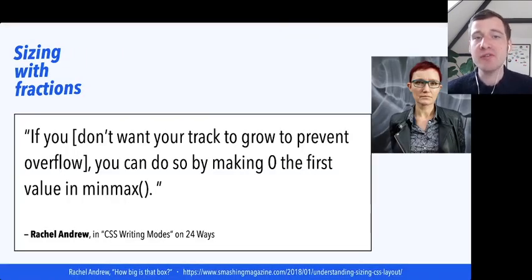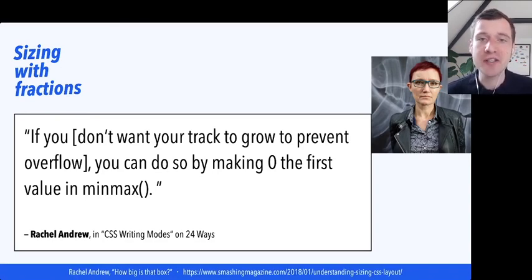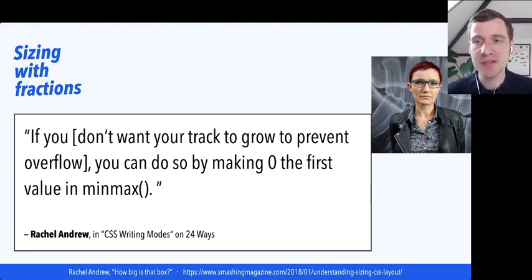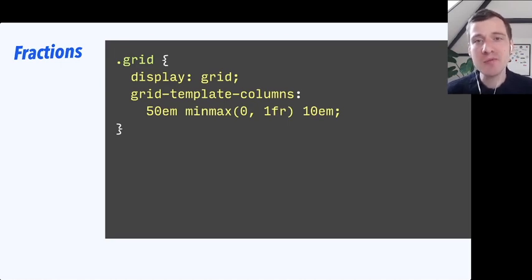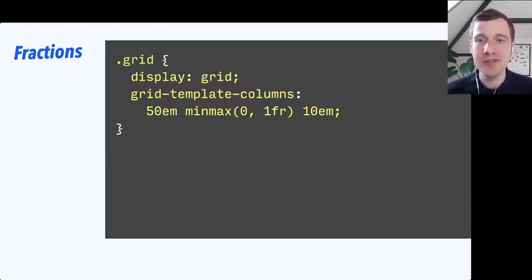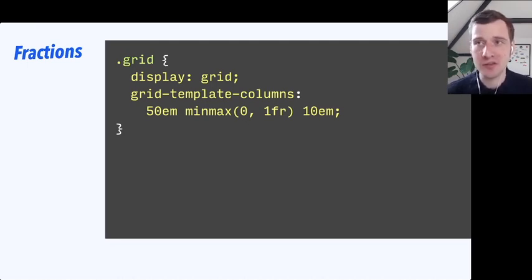If you don't want your track to prevent overflow, what you could do is use a minmax() function with a FR unit as the max and zero as the min — something like minmax(0, 1fr). By default, the minimum for a column with FR will be auto, which is why that long word was able to make our grid much bigger. If we use zero there, that behavior will not happen, but you'll have the overflow problem we saw before. So it depends on what you want, but you can force a track not to grow based on one word's content.